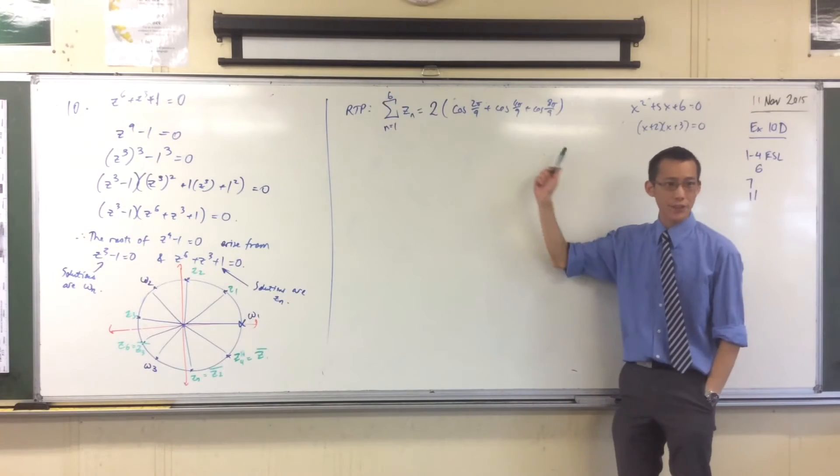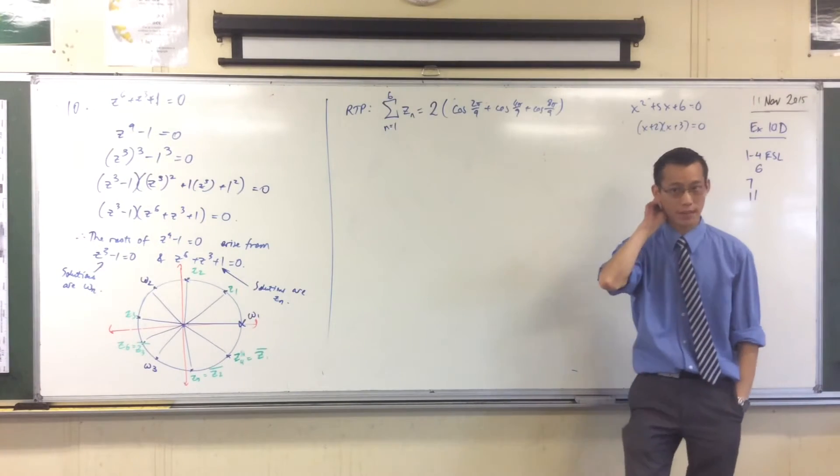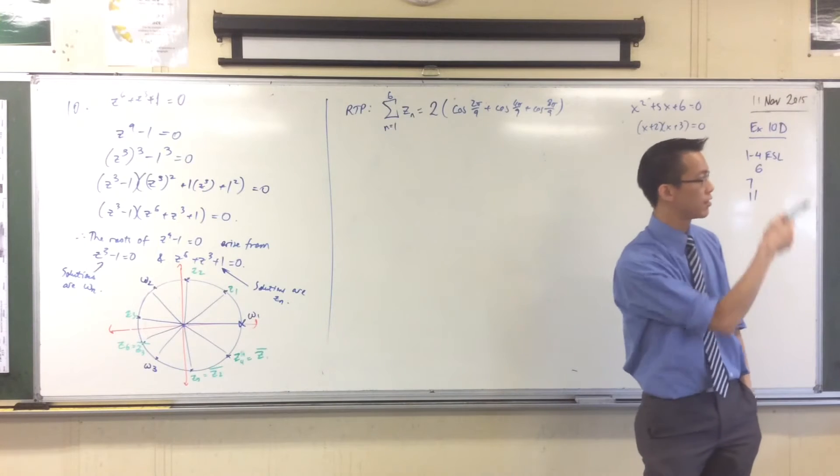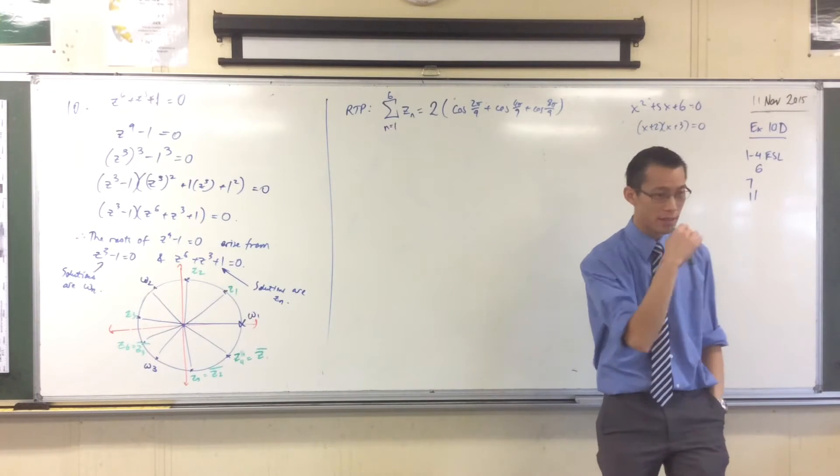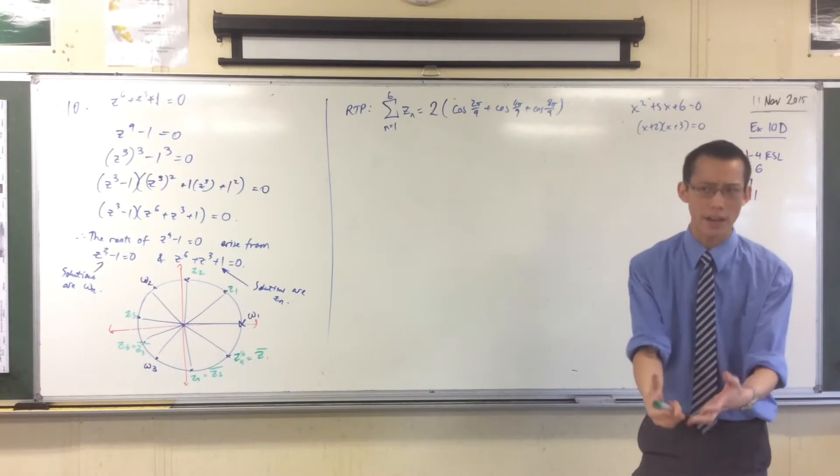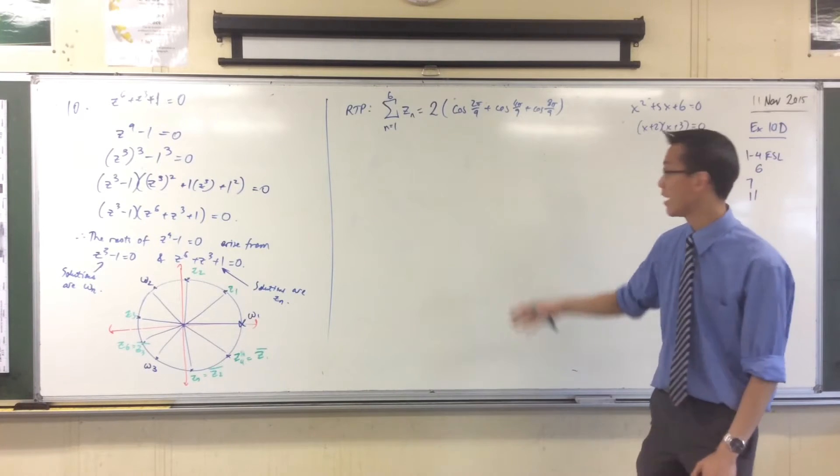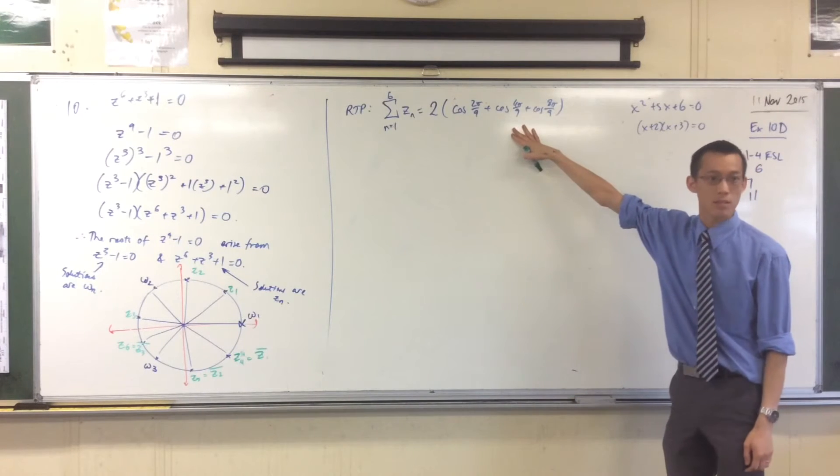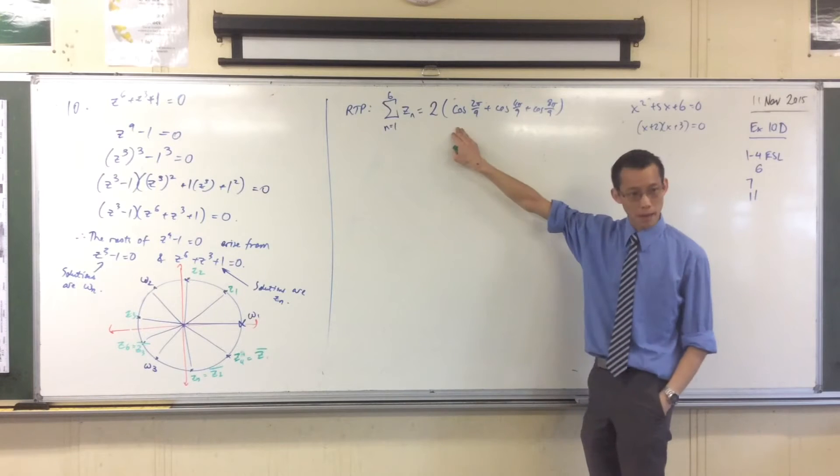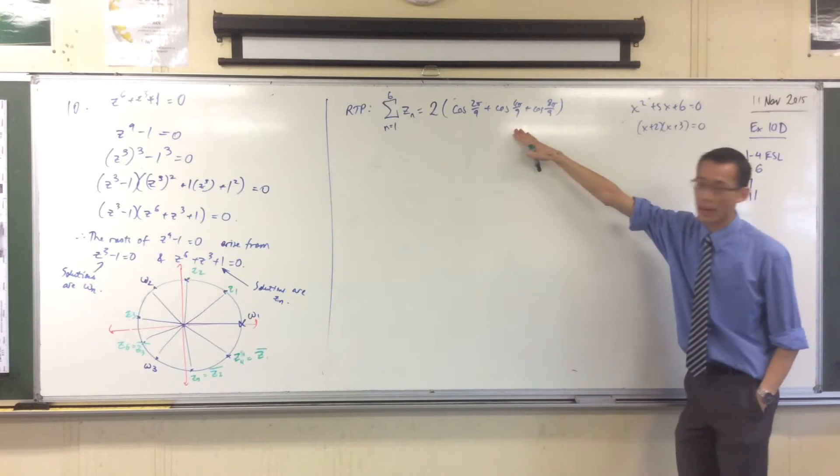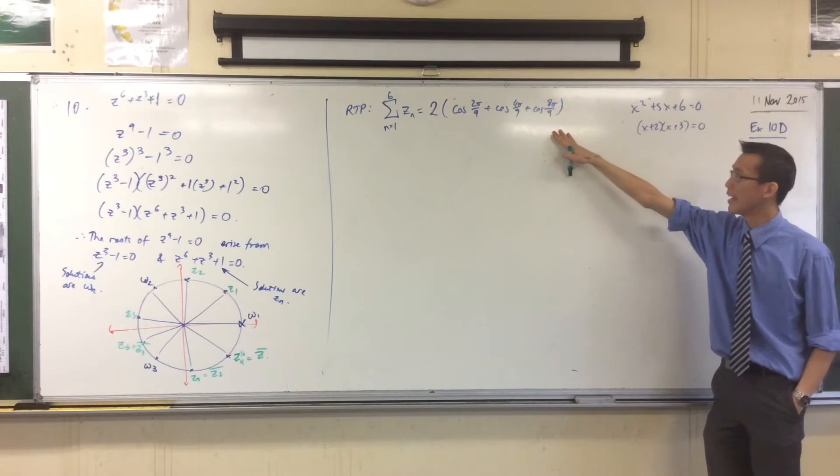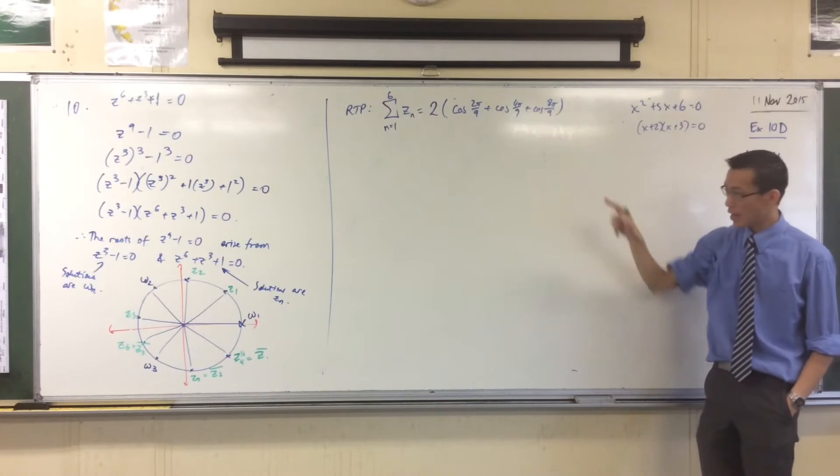you stare very carefully at this result that we're trying to prove. In fact, we're going to do this a couple of other times. When they give you an answer, they're really trying to help you, they really want you to get there. So this is supposed to help us. 2π on 9, 4π on 9, 8π on 9. Where do these angles appear in our diagram?